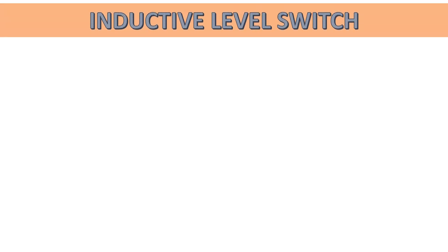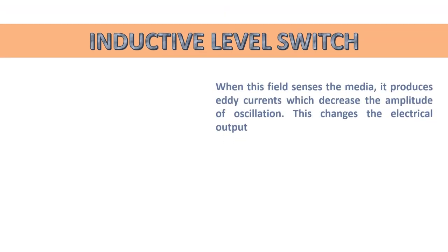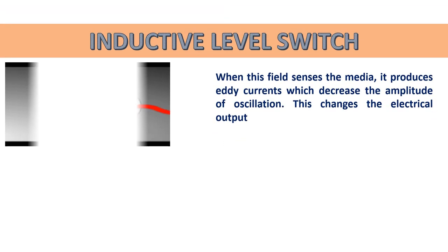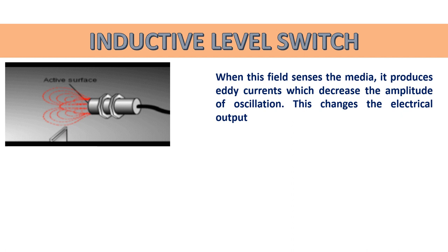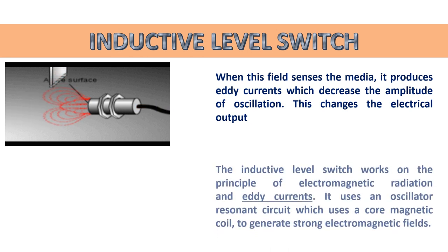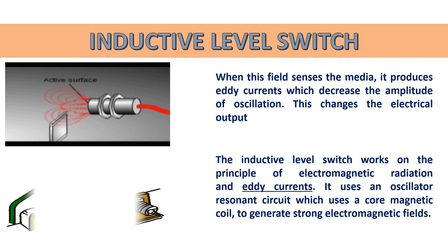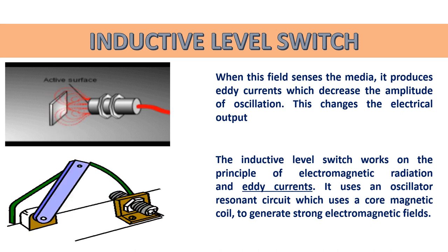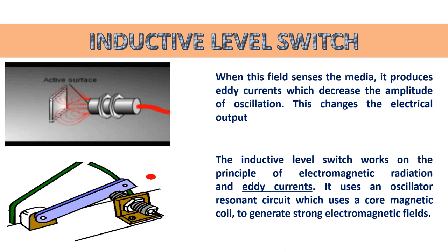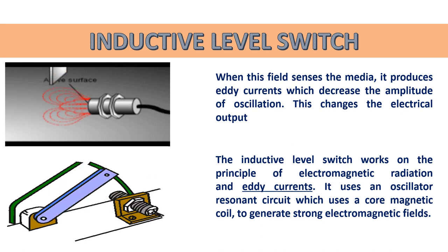The inductive level switch works on the principle of electromagnetic radiation and eddy currents. It uses an oscillator resonant circuit with a core magnetic coil to generate strong electromagnetic fields. When this field senses the media, it produces eddy currents which decrease the amplitude of oscillation, changing the electrical output.